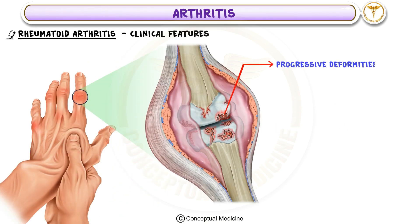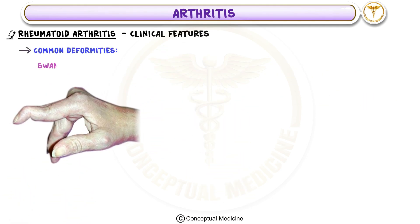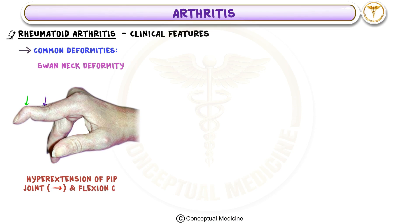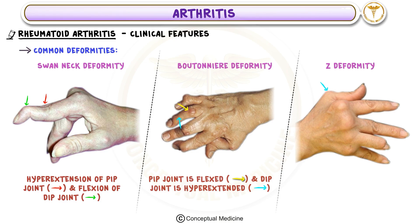Progressive Deformities: In long-standing rheumatoid arthritis, joints develop progressive deformities due to chronic inflammation. Common deformities include: swan neck deformity — hyperextension of the proximal interphalangeal joints and flexion of the distal interphalangeal joints; boutonnière deformity — flexion of the proximal interphalangeal joints with hyperextension of the distal interphalangeal joints; and Z-deformity — finger deviation at the metacarpophalangeal joints, resembling a zigzag pattern.